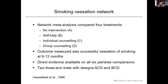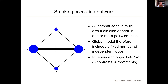The majority of the trials were two-arm trials, but there were also two three-arm trials with designs ACD and BCD. Although there are multi-arm trials included in this network, all the comparisons in the multi-arm trials also appear in one or more pairwise trials. So the number of independent loops is fixed rather than varying according to how the multi-arm trials are parametrized. The number of independent loops here is equal to three.